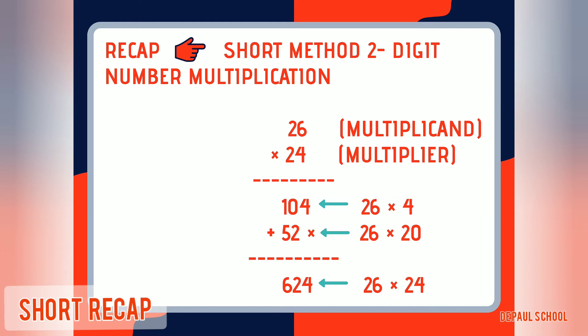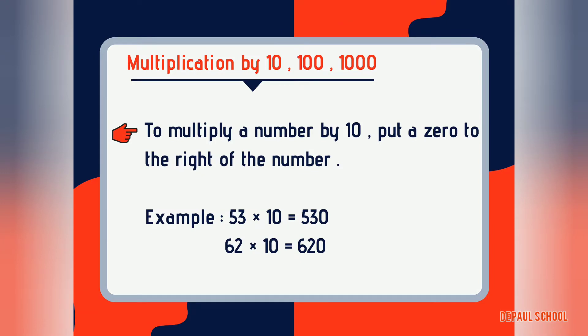Now let's move on to our next topic: multiplication by 10, 100, and 1000. First, let me explain how to multiply a number by 10. When we multiply a number by 10, we just put a zero to the right of the number. For example, when 53 is multiplied by 10, we write 53 and add a zero to the right, giving the answer 530.